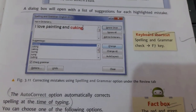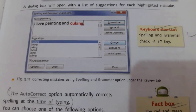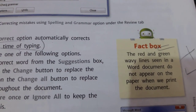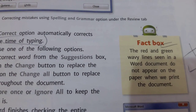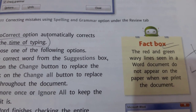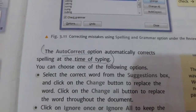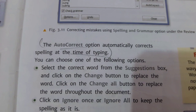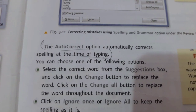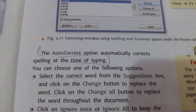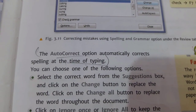The shortcut key for spelling and grammar check is F7. Now the fact box: the red and green wavy lines seen in a Word document do not appear on the paper when we print it. Also, the Autocorrect option automatically corrects the spelling at the time of typing if it is selected beforehand.